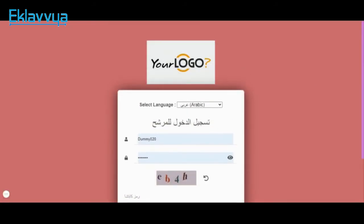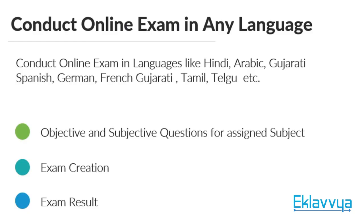In short, the Ecologo platform supports the facility to define your question bank in any language. A user interface is provided, and you can also customize the user interface for the examination section, where candidates can select their preferred language while attempting the online exam. Conducting online exams in any regional language like Hindi, English, Spanish, Gujarati, Tamil, Telugu, or international languages like Arabic, Spanish, and German is very easy with the Ecologo platform.